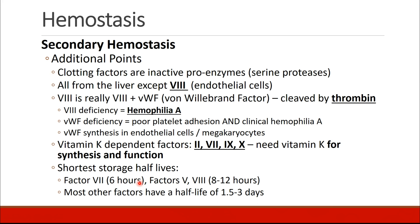A few important trivia points: the clotting factors all start out as inactive proenzymes and then get activated. They're all made in the liver except factor VIII, which is made in the endothelial cells. Factor VIII is formed as a complex with von Willebrand's factor together, and it's cleaved by thrombin. Patients with a factor VIII deficiency have hemophilia A. Patients with von Willebrand's deficiency will have problems with platelet adhesion and will also have clinical hemophilia A. Von Willebrand's factor is synthesized in endothelial cells and also in the megakaryocytes. The vitamin K-dependent factors are II, VII, IX, and X. The factors with the shortest storage half-lives are factors VII, V, and VIII — factor VII has a 6-hour half-life, VIII has an 8 to 12-hour half-life, while most other factors have a half-life of 1.5 to 3 days.